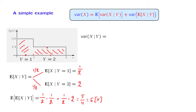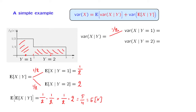Let us now turn to the conditional variance of X given Y. Once more, this quantity is a random variable — its value depends on what Y turns out to be. We have the same two possibilities: Y could be equal to 1 or Y could be equal to 2, and these happen with equal probabilities. If Y is equal to 1, conditional on that event, X has a uniform PDF on this range, on an interval of length 1. And we know that the variance of a uniform PDF on an interval of length 1 is 1/12.